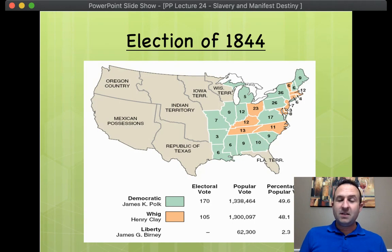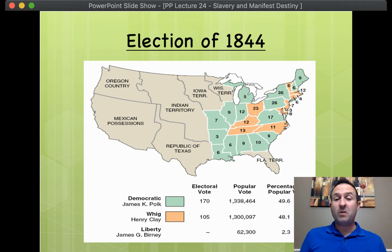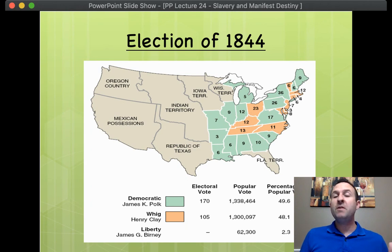And one more thing: Texas was given the ability to join the Union and split into five smaller states if it chose to do so. Can you imagine? Instead of being the second biggest state in the country, Texas split into five smaller states? Nonetheless, James K. Polk wins a narrow election over Henry Clay. He'll be the next president, and he'll be the one who deals with the fallout of John Tyler's decision.